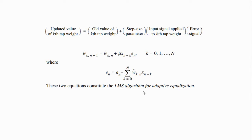This is the LMS (Least Mean Square) algorithm. The updated value of the K-th tap weight is equal to the old value of the K-th tap weight plus the step size parameter mu multiplied by the input signal applied to the K-th tap weight and the error signal. The updated weight is represented as Ŵ(K, N+1) = W(K, N) + μ · X(N−K) · E(N), where E(N) = A(N) − Y(N) and Y(N) = summation K equal to 0 to N of W(K,N) · X(N−K). These two equations are called the LMS algorithm for adaptive equalization.